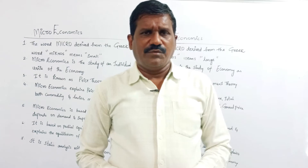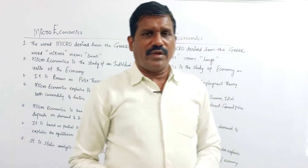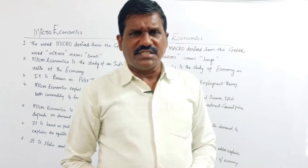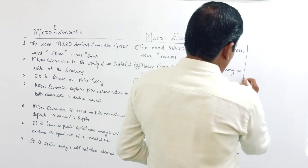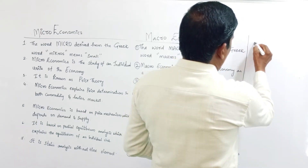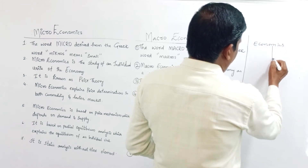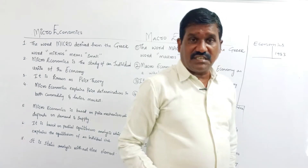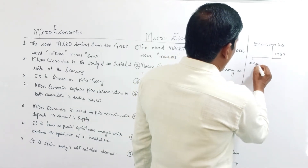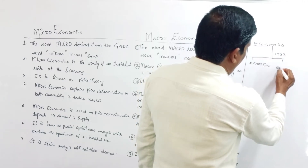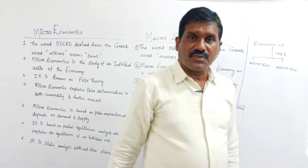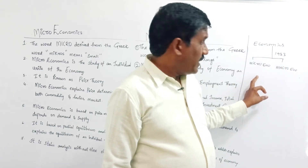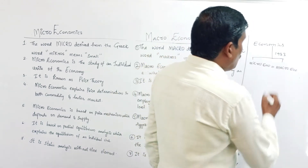Hi students. In this video I am going to analyze microeconomics and macroeconomics — what is the micro and what is the macro. Economics is divided into two parts. Ragnar Frisch in 1933 divided economics into two types: one is microeconomics and the second one is macroeconomics. These are the two parts of economics.